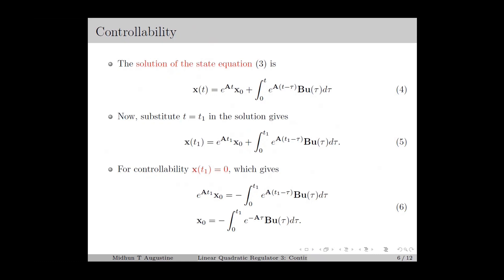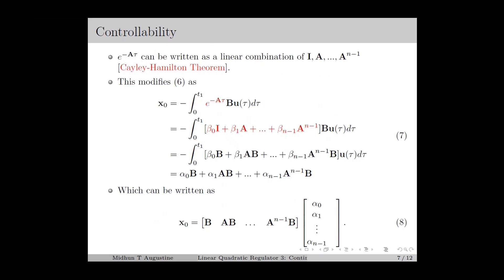If we substitute x(t1) = 0, then this equation can be rewritten as equation number 6, in which we have taken this term to the right-hand side, and the factor e^(At1) is common in both sides and can be cancelled. From the Cayley-Hamilton theorem, we have the important result that every polynomial of the square matrix A of order n×n can be written as a linear combination of the matrices I, A, A^2, up to A^(n-1). Consequently, we can rewrite the exponential e^(A*tau) as a linear combination of I, A, A^2, up to A^(n-1), and rewrite the last equation as equation number 7.